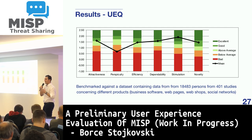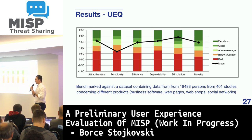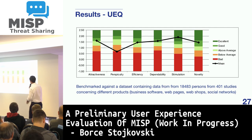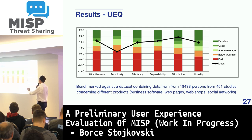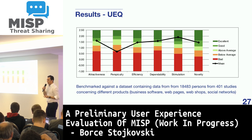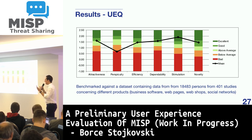On all other aspects, it is rated very good — especially on the hedonic side, which is excellent or above average. These benchmark values come from a dataset comprising 401 studies with more than 18,000 people, giving average estimates of different platform types using this scale.